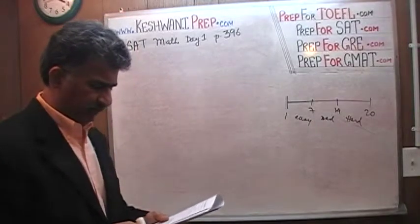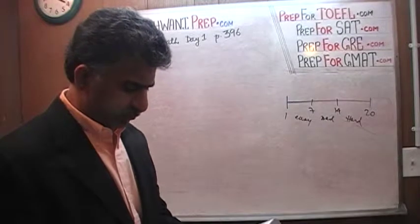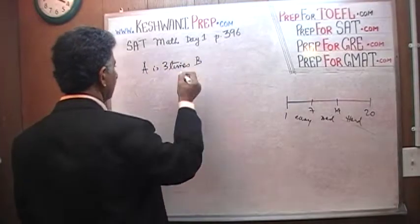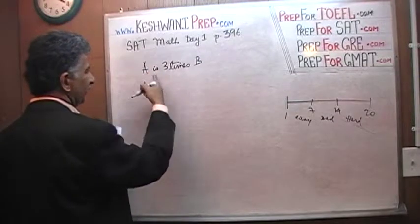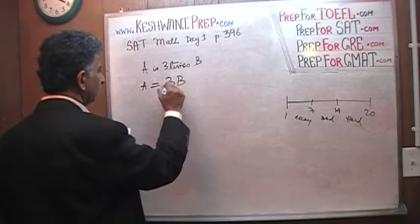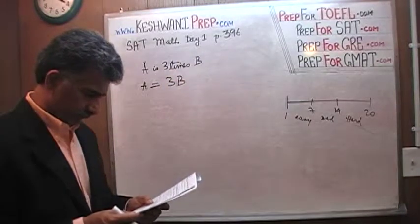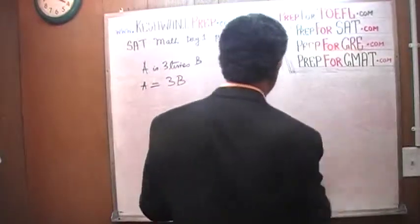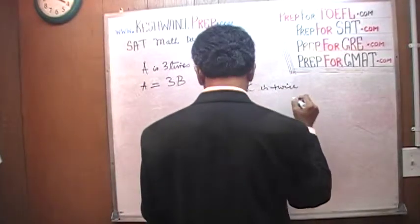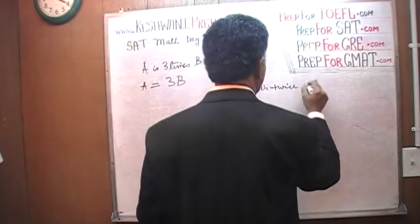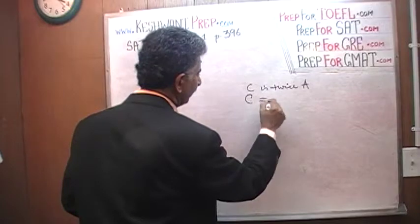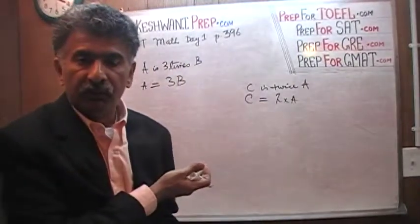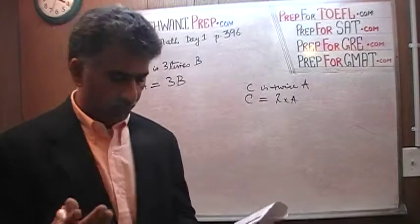Number 2. Trains A, B, and C pass through a station at different speeds. Train A's speed is 3 times train B's — so in equation form: A = 3B. Train C's speed is twice train A's — so C = 2A. That's the first thing: you have to absorb and digest the information before you worry about what the punchline is.